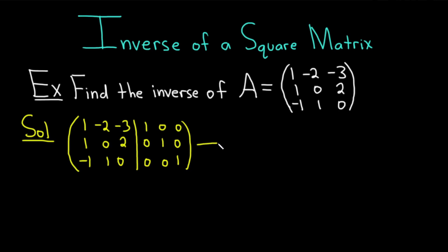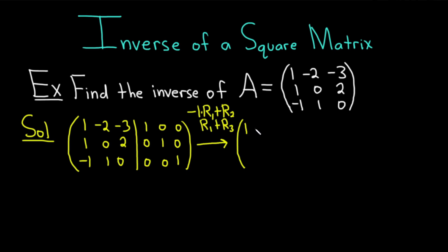I'm going to write down what we're doing before we do it, so it helps with the computations. To eliminate the 1 in the second row, we're going to multiply the first row by negative 1 and add it to the second row. Then to eliminate the negative 1 in the third row, we're going to add the first row to the third row. These take a lot of practice — it's very easy to make a mistake, so if you're feeling frustrated, it's okay. It just takes practice.